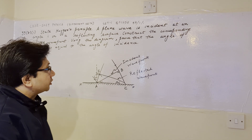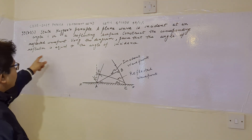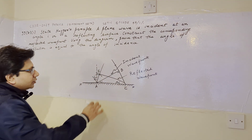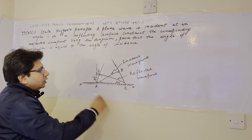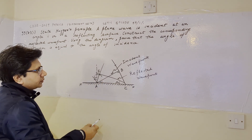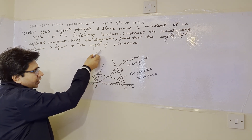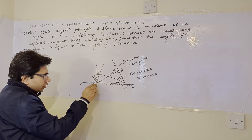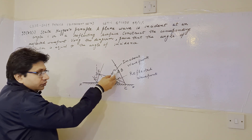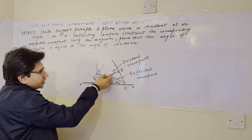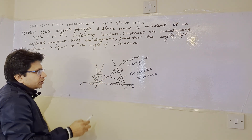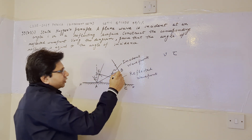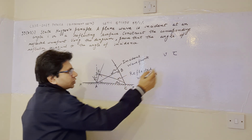Now for the second part: we have to prove that the angle of reflection is equal to the angle of incidence. We draw a diagram showing a plane reflecting surface with an incident wavefront. The incident wavefront AB strikes the surface — end A strikes at position A first, while the other end is at B. The speed of the wave is v, and the time taken for the wavefront to travel from B to C is τ.